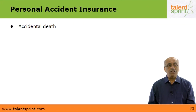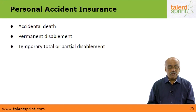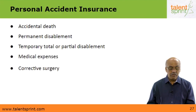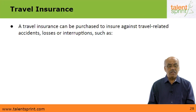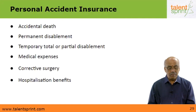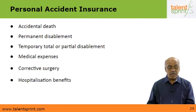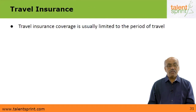Personal accident insurance also covers accidental death, permanent disablement, temporary total or partial disablement, and medical expenses. Travel insurance can be purchased to cover travel-related accidents, losses and interruptions — such as accidental death, permanent or temporary disablement, medical expenses, corrective surgery and hospitalization benefits, and funeral expenses. Travel insurance coverage is normally limited to the period of travel.